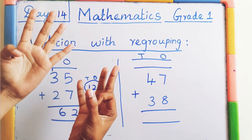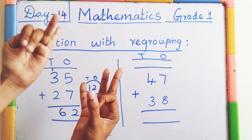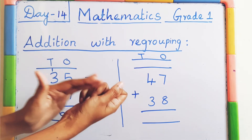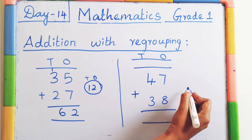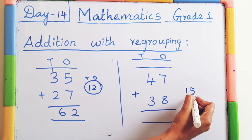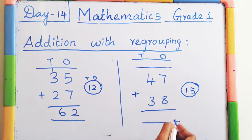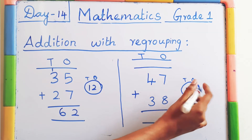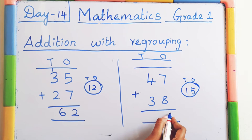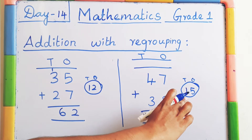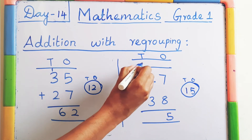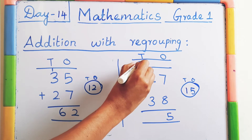After 7: 8, 9, 10, 11, 12, 13, 14, 15. What number did you get? 15. Write 15 here and circle this number. Write ones and tens for this number. The ones place has 5, so write 5 in the ones place. In the tens place the number is 1, so 1 should be carried over.